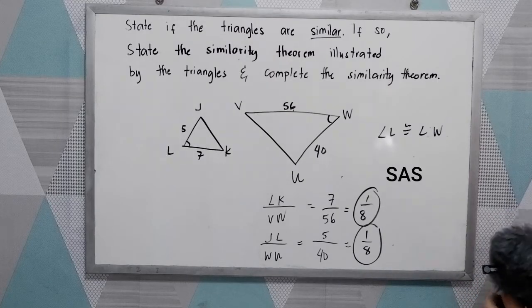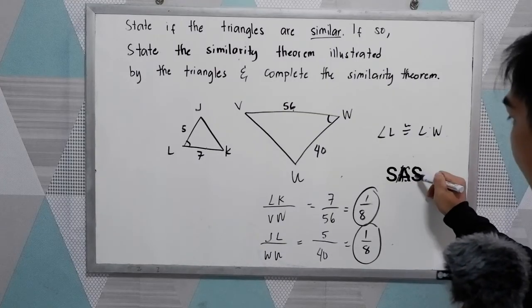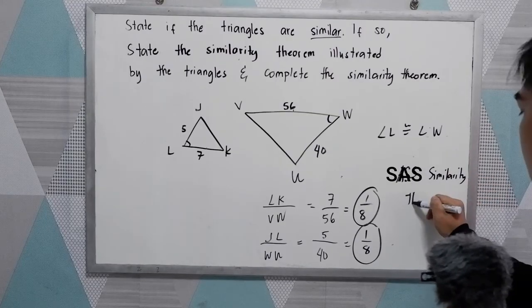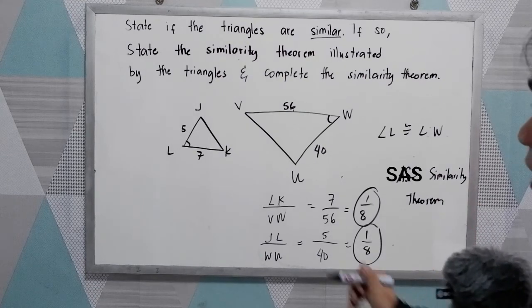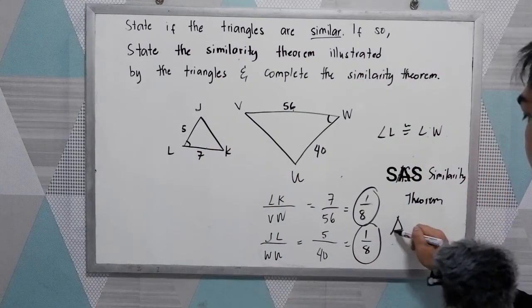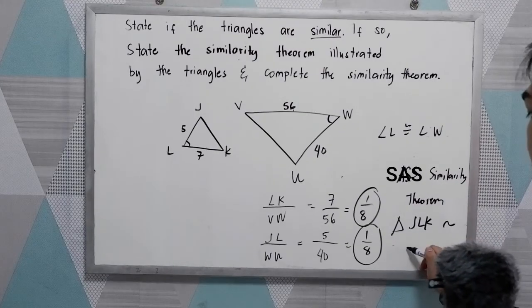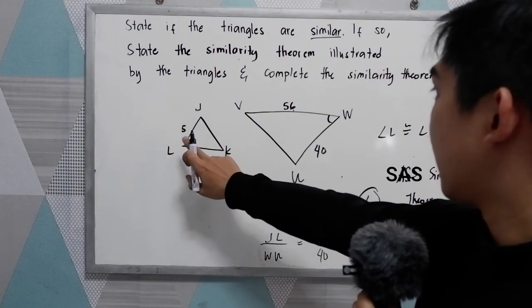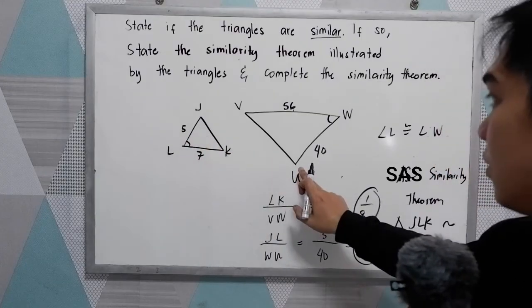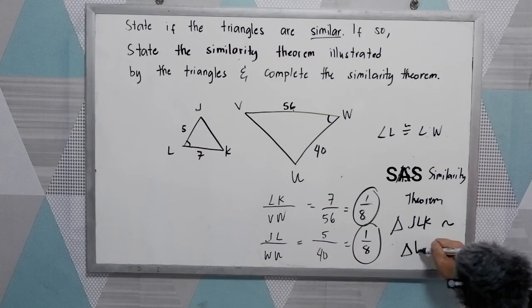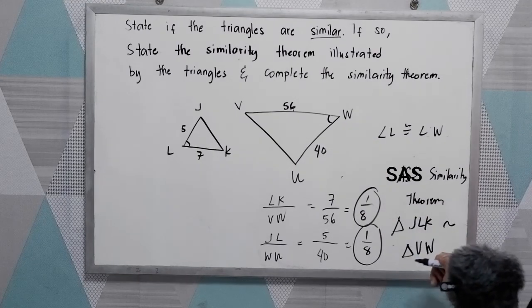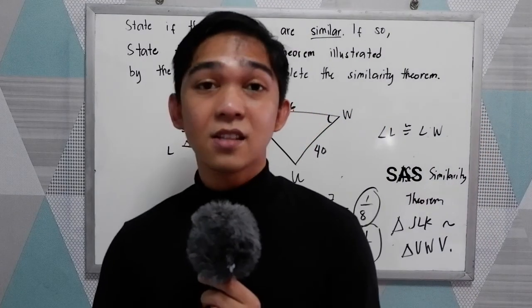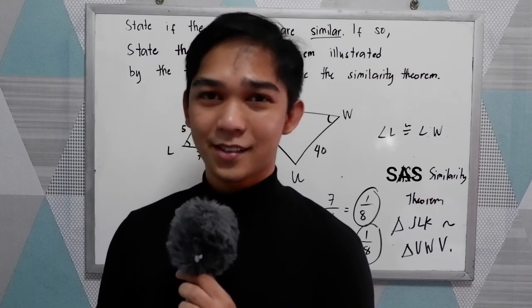we can conclude that by the SAS Similarity Theorem, Triangle JLK is similar to Triangle UWV. That is the SAS Similarity Theorem. Thank you for watching.